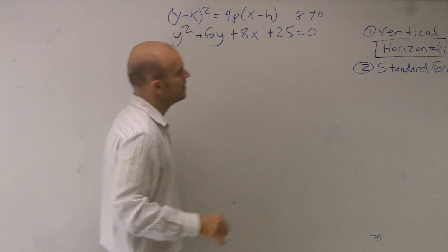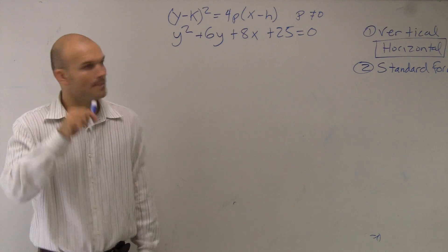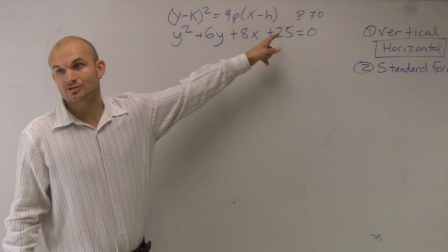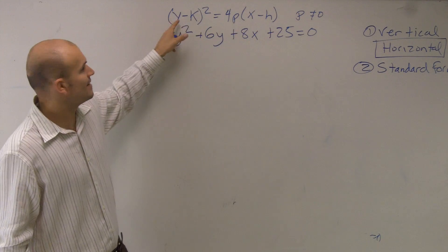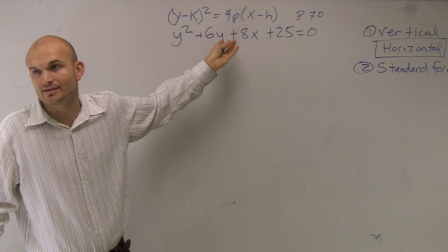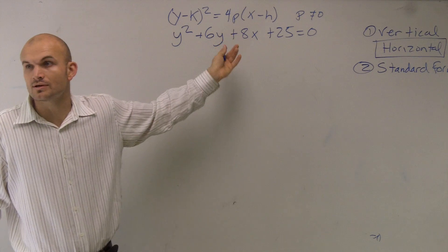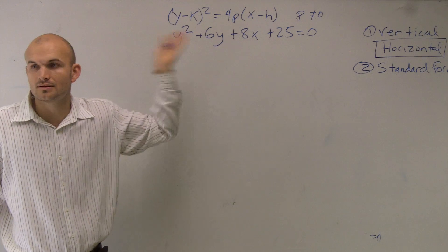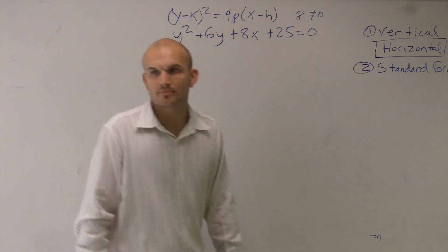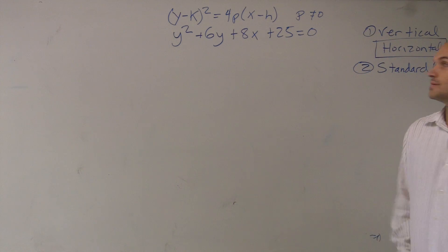A couple things to remember: what happens if p equals 0? If p equals 0, then we'd have 0 times x, so we'd have no x term. We'd have y squared equals 0, and taking the square root of both sides, y would equal 0. But y equals 0 is just a line on the x-axis, so you wouldn't have a parabola. That's why p cannot equal 0.